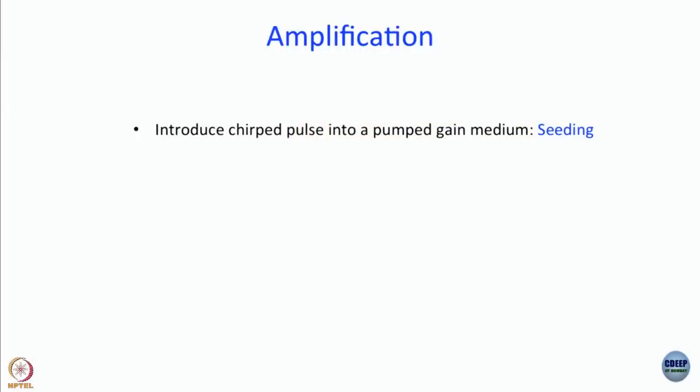The way you do amplification is first you do seeding. Seeding means introducing a chirped pulse into a pumped gain medium. The gain medium is typically the same as the one used to generate the ultrashort pulse in the first place. So if you are using a Ti:sapphire laser, you typically use a Ti:sapphire gain medium.